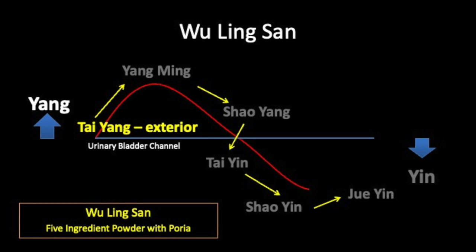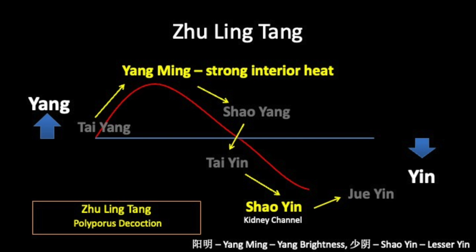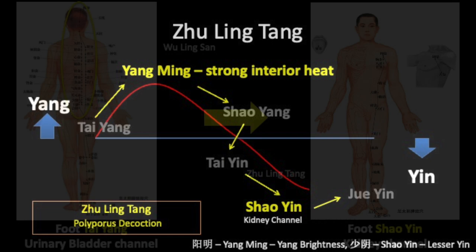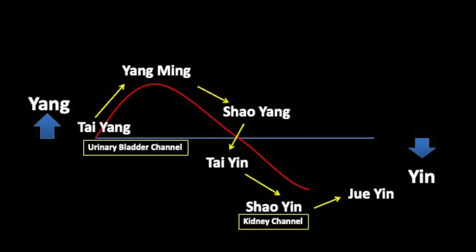On the other hand, Zhu Ling Tang is found in clauses 223, 224, and 319 of the Shang Han Lun. Clauses 223 and 224 are in the Yang Ming or Yang Brightness section, while clause 319 is in the Shao Yin or Lesser Yin section. The Shao Yin section implies that the disease has become more serious and progressed inwards from the urinary bladder Yang channel to the Kidney Yin channel. Both channels are associated with water metabolism, but the Kidney Yin channel is the more vital one.